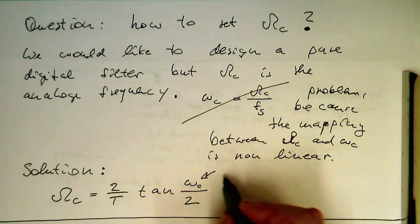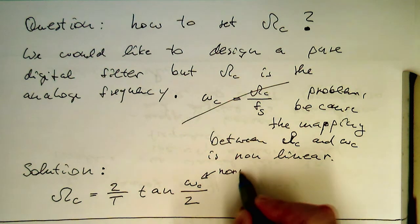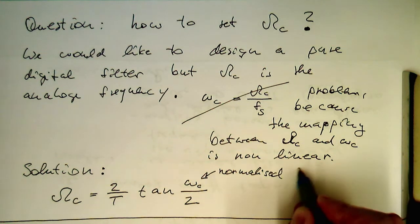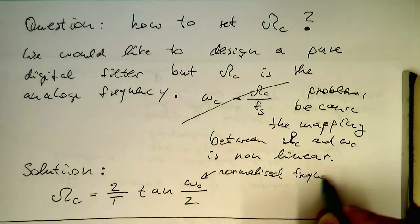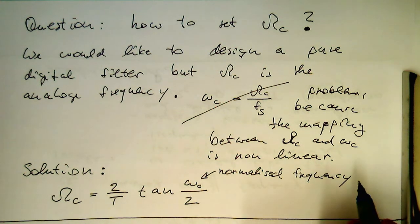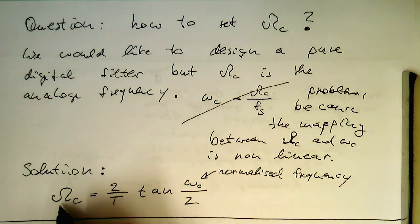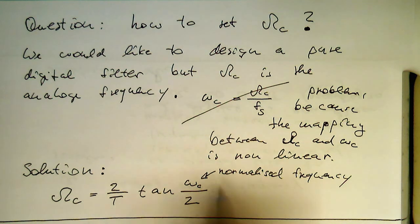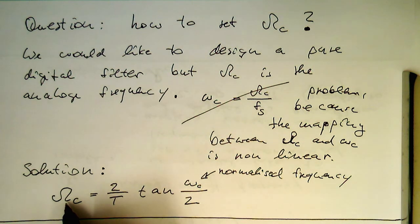So that's our normalized frequency. And this was here our analog frequency. So what we do is we just put our normalized frequency or our desired cutoff frequency in this formula, and we're getting our omega_c out, and we're putting that omega_c then into our filter function.